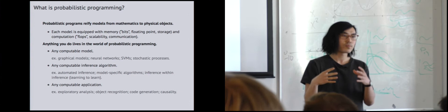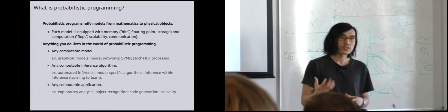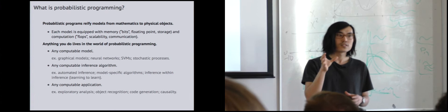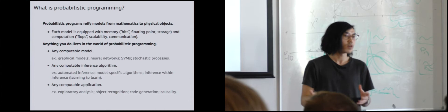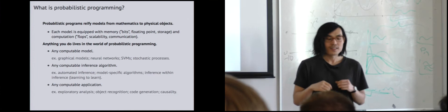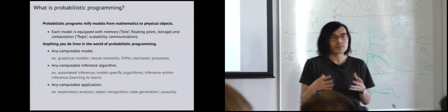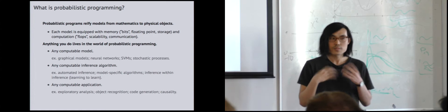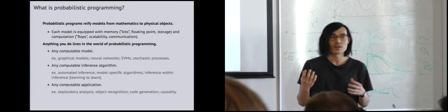Computation is with respect to how many flops it actually takes to sample from the model, to calculate log probabilities, to do training, to do testing. All those things are considerations once you really take the mathematics behind something from the age of Gauss and try to implement them in the age of Turing. Anything you do lives in the world of probabilistic programming. Any computable model must be representable on a computer, and any inference algorithm you want to do — automated inference, model-specific algorithms, or inference within inference like Bayesian optimization — all those things live in the world of probabilistic programming.